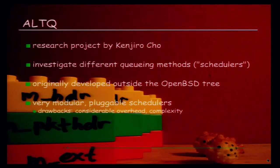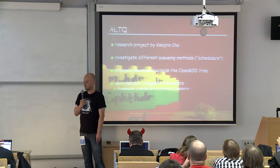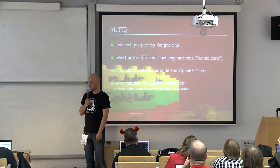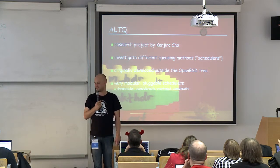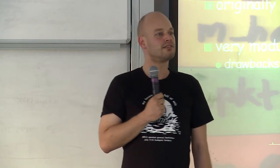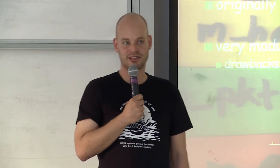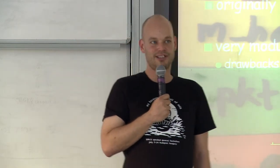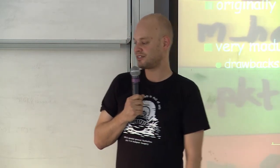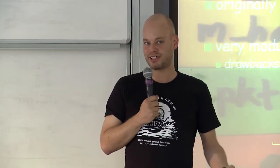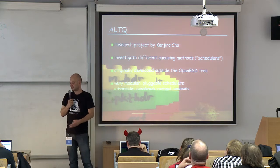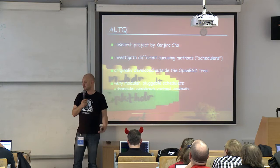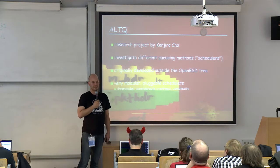We already have bandwidth shaping and priority queuing in the form of ALTQ, a research project by Kenjiro Cho from around 2000. Bandwidth shaping and priority queuing were kind of new back then. His goal was to investigate different queuing methods — he called them schedulers. It was originally developed outside the OpenBSD tree as his university thesis. Because it was a research thing used to figure out which schedulers work best, it's highly modular and pluggable, which means considerable overhead and complexity not suitable for production.